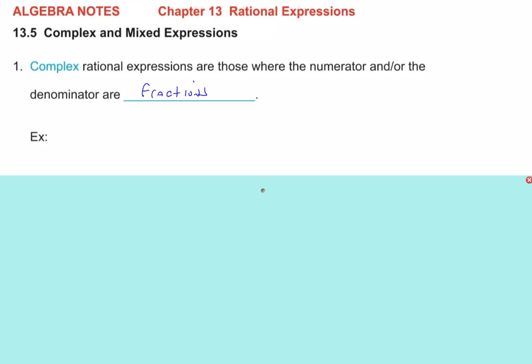So what do we mean by that? We can have a fraction in the numerator. Give yourself a main fraction bar. Let's stick like 2 over x in the top and put like a 7 in the bottom. That's a complex expression — we have a fraction for a numerator. Maybe we have an x plus 3 in the numerator over an x over 5 in the denominator.